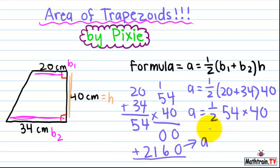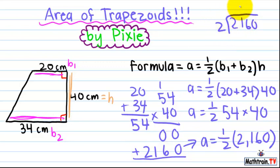Then your area equals one-half times 2,160. Then you do 2,160 divided by 2. That is 1,080.